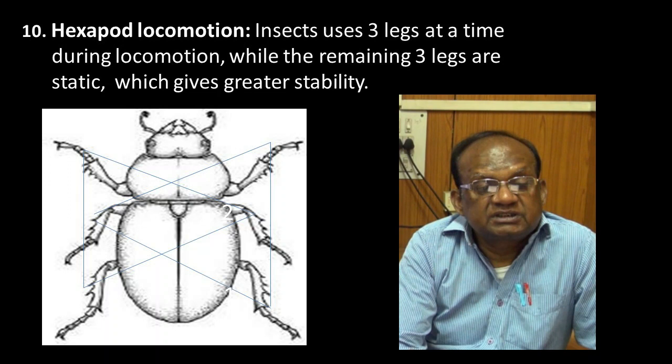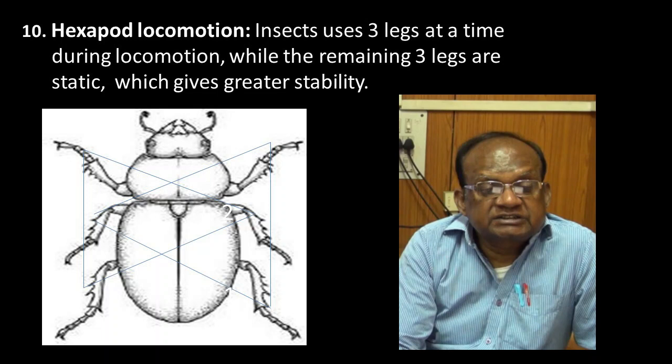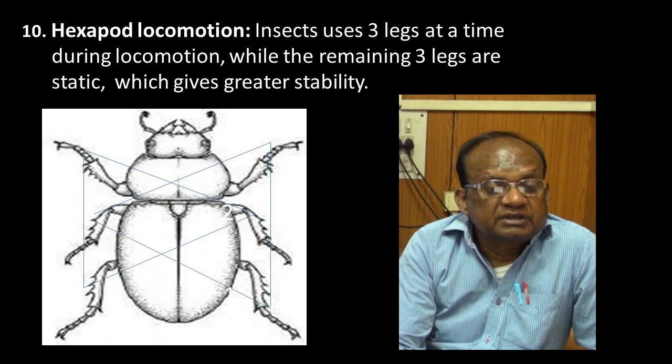Tenth factor is hexapod locomotion. Insects have six legs but use only three legs at a time during locomotion, while the remaining three legs are stationary. This gives them greater stability and efficient movement.